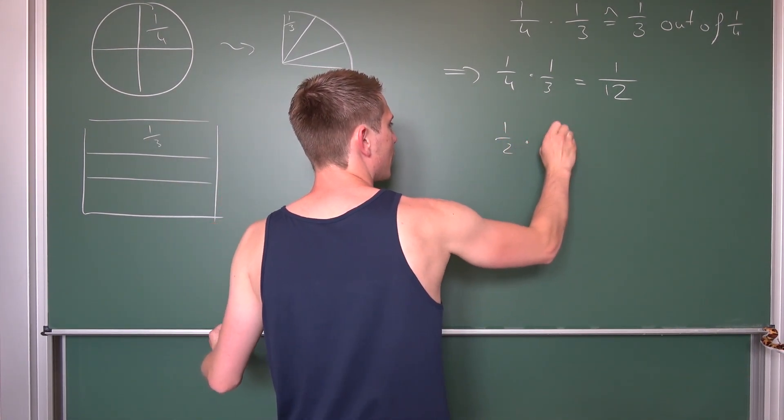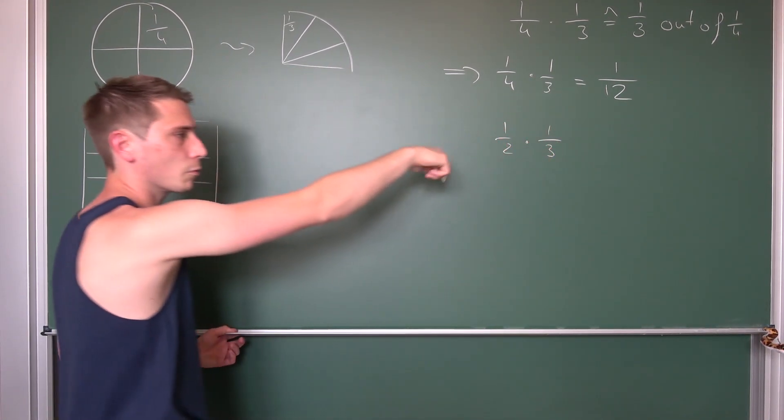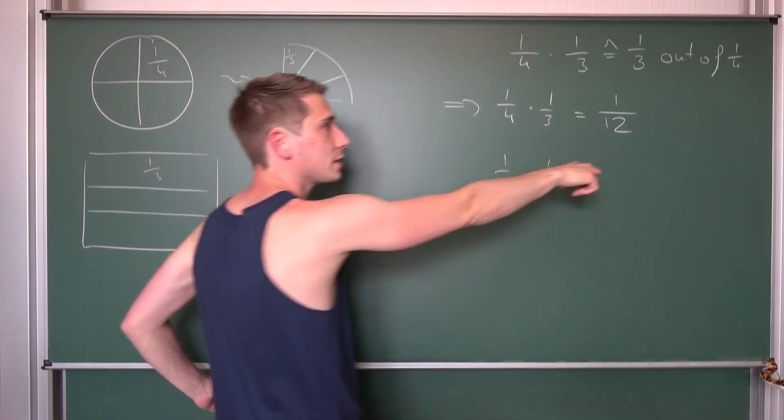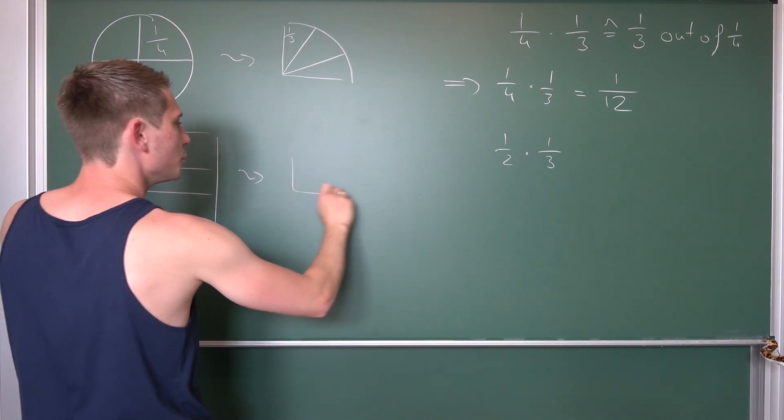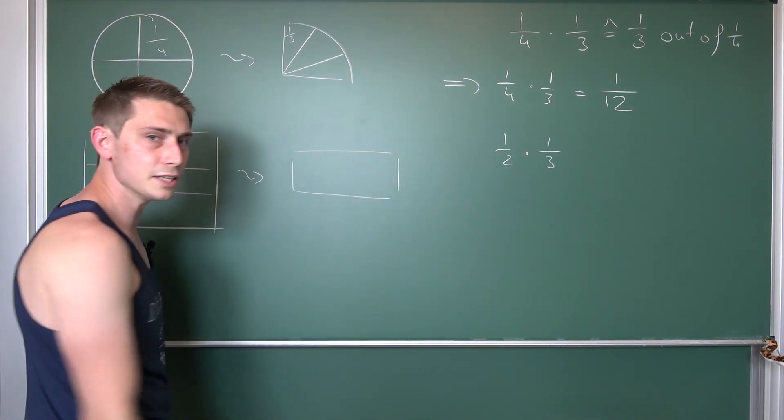One half out of a third. One half times one third. It's the same question we are basically asking. Meaning, we are going to take ourselves to one third. Put it here. And now, what is one half out of a third?